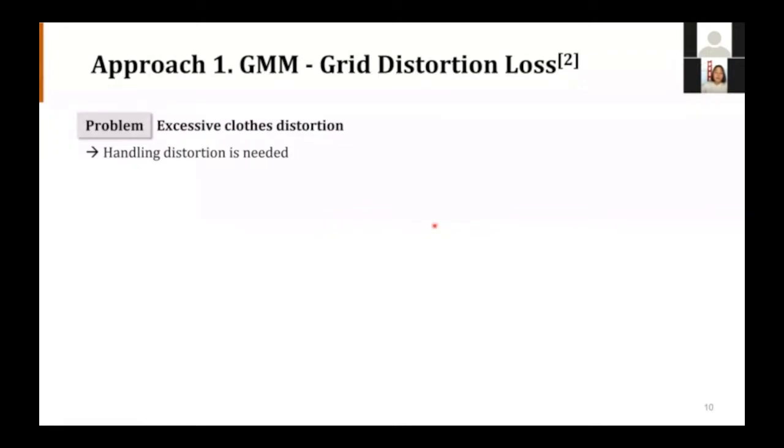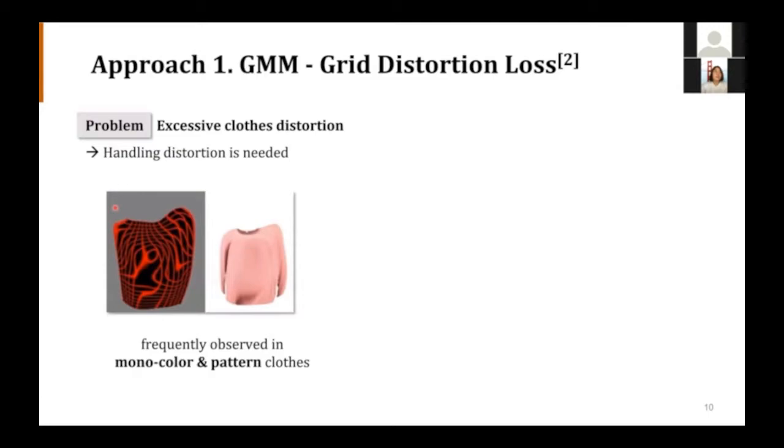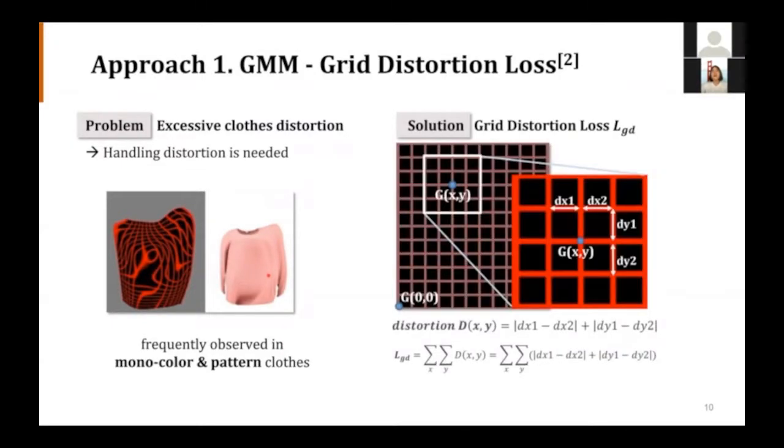From now on, we are going to talk about each improvement approach. The first approach is changing GMM loss function. Approach one is inspired by a paper that introduced these ideas without specific configuration. We observed excessive cloth distortion. We used a rectangular grid like this, but frequently unreasonable warping was observed, especially in monocolor or repetitive pattern clothes. Thus, we are proposing to use grid distortion loss LGD. This indicates the extent of distorting of the grid. So the larger LGD means the more distortion. So by controlling this loss, we can confine the excessive distortion.